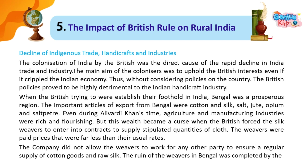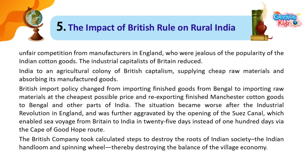The weavers were paid prices far less than their usual rates. The company did not allow the weavers to work for any other party to ensure a regular supply of cotton goods and raw silk. The ruin of the weavers in Bengal was completed by unfair competition from manufacturers in England, who were jealous of the popularity of Indian cotton goods. The industrial capitalists of Britain reduced India to an agricultural colony of British capitalism, supplying cheap raw materials and absorbing manufactured goods.